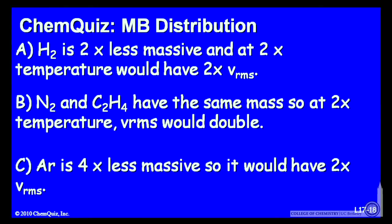Let's look at a possible explanation for each answer. A, H2 is two times less massive, and at twice the temperature would have twice the root mean square velocity.